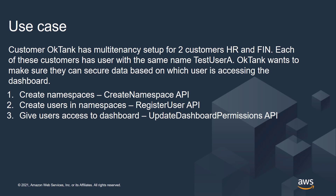To talk about the use case, let's say there is a customer, Optank, who has a multi-tenancy setup for two customers of their own: HR and Fin. Each of these customers has a user with the same name, TestUserA. Optank wants to make sure they can secure data based on which user is accessing the dashboard. With existing row-level security, rules are enabled based on username, but in this case the username is the same — TestUserA — across both customers HR and Fin. Hence, to be able to secure their data, they have to set up row-level security using the new RLS with namespaces feature.